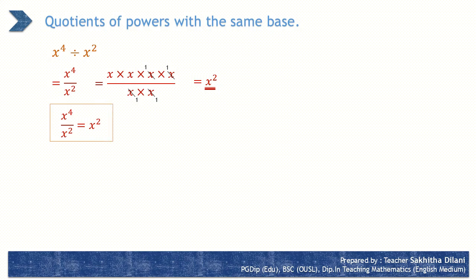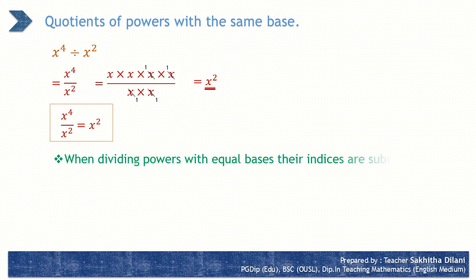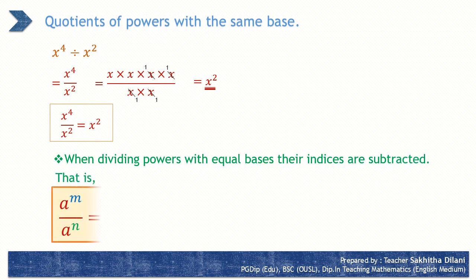Here, the answer x to the power 2 is called the quotient. The base of the quotient is x, which is the common base of the original two powers. The index of the quotient is the difference between the indices of the original powers. This can be expressed as a law of indices: when dividing powers with equal bases, their indices are subtracted. That is, a to the power m over a to the power n equals a to the power m minus n.